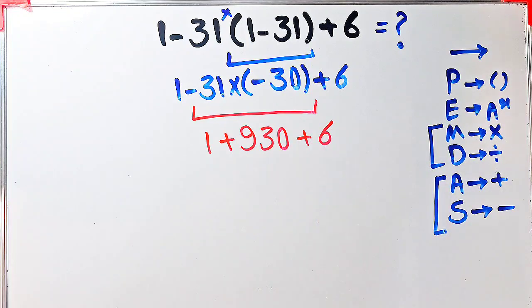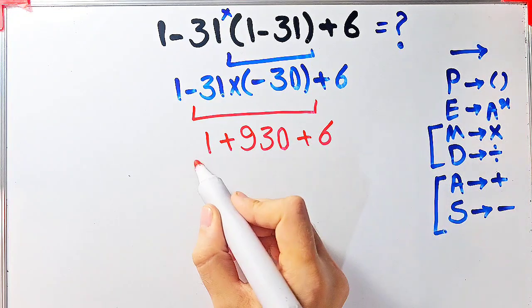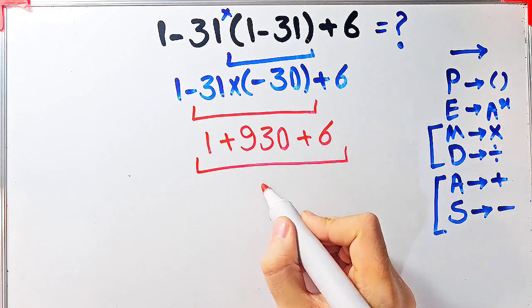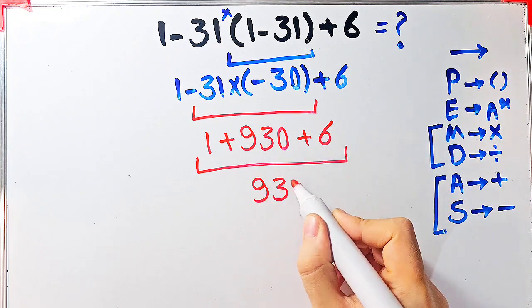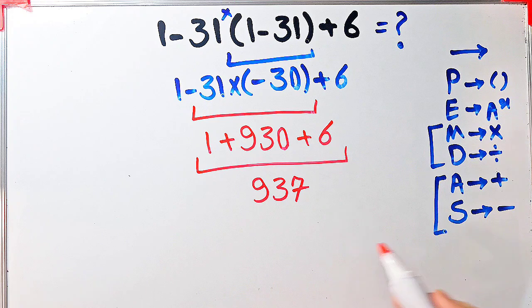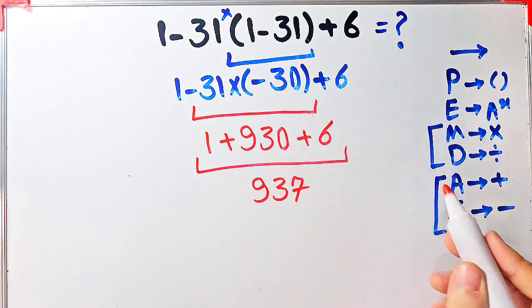1 plus 930 plus 6 equals 937, and the final answer of this question equals 937.